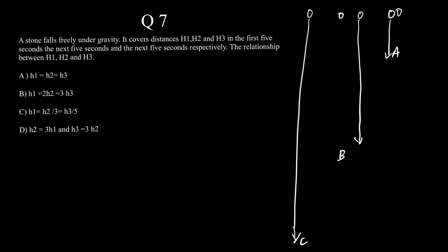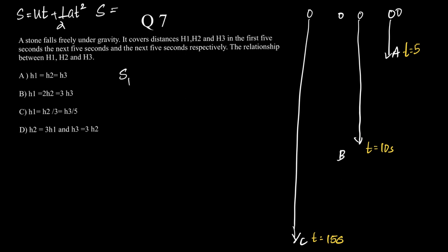So this much distance is at t equal to 5 seconds. This much distance is at t equal to another 5, which is t equal to 10 seconds. And this much is at another 5 seconds, which is t equal to 15 seconds. Now, what is S? S equals ut plus half a·t². Since the stone falls from rest, S equals half·g·t².